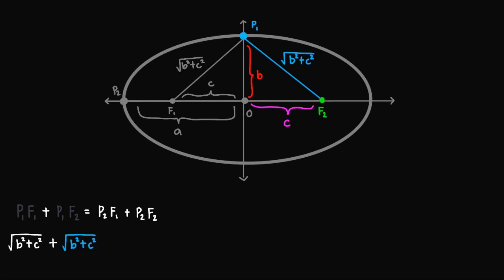We now move on to the line segment P2F1, or this one. Observe that we have the value A and C. So to obtain this, we simply subtract this large part by this smaller part to obtain this portion, or that is we'll have A minus C. So that is the length of the line segment P2F1.